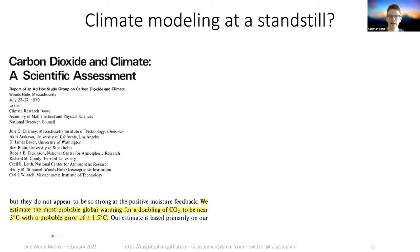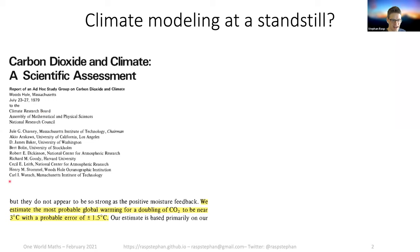Most of you will probably be familiar with this, but I'll bring everyone on the same page about why we are thinking about exploring machine learning approaches for climate modeling in the first place. I grabbed this first organized climate assessment from 1979. The author list has a lot of illustrious figures on it. They basically came up with an estimate of the most probable global warming for doubling of CO2 — around 3 degrees with a probable error of plus or minus 1.5 degrees.